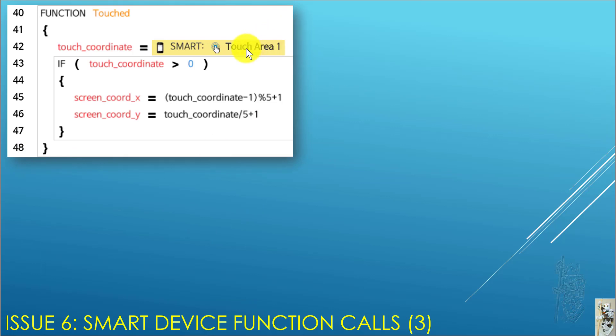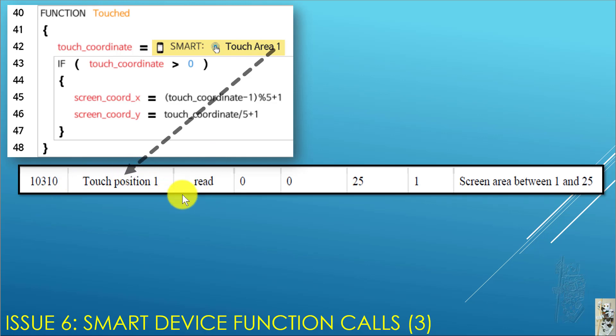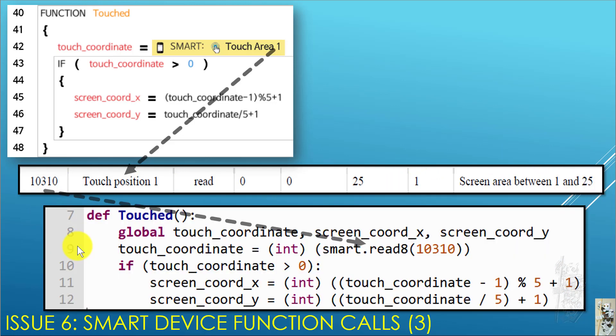How about touch area? How do you pick up the touch area on the smart device? Same thing again. You go to control table of the smart. Find touch position one. It's address 10,310. It's one byte. The number is between 1 and 25. So, that's how you design it. Smart, read8, 10,310. Pick it up, cast an integer. Save to press coordinate, and then you do yourself. It's the same as you can see. It's the same line. Same logic. Same kind of statement between task and MicroPython.